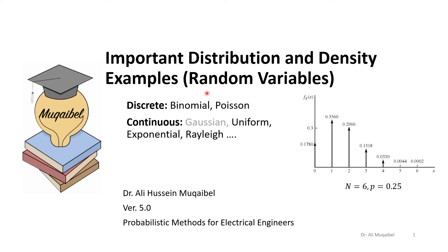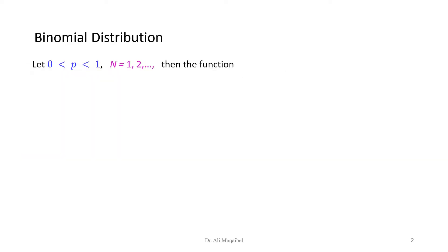We'll look at binomial and Poisson as examples of discrete. For the continuous, we have covered Gaussian. We'll look at uniform, exponential, and Rayleigh distributions. All right, so the binomial distribution.